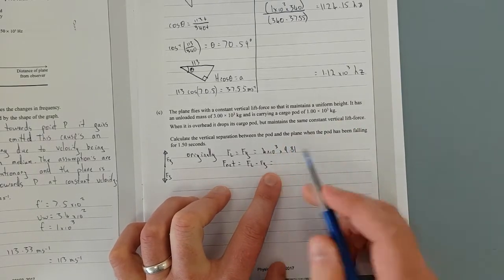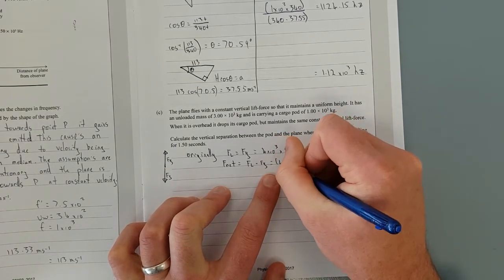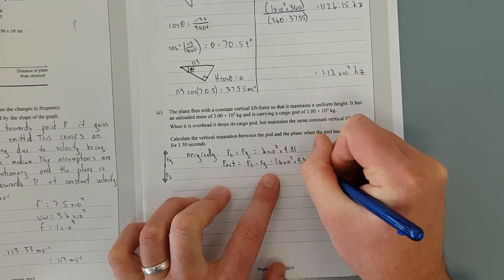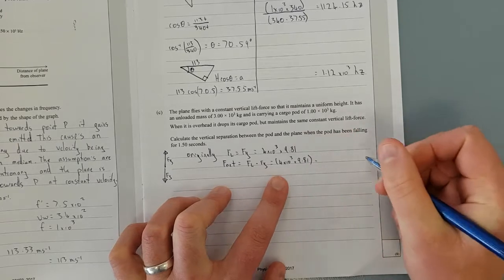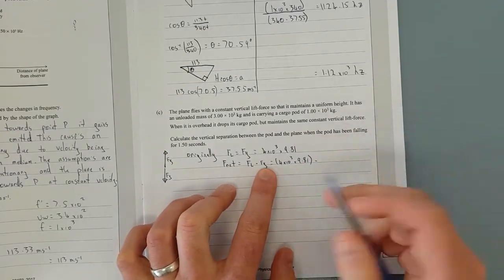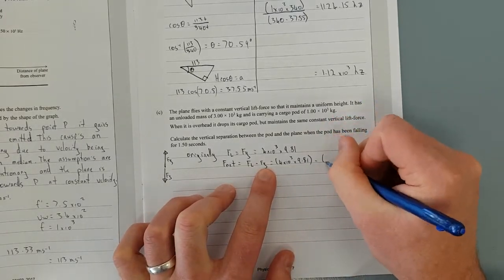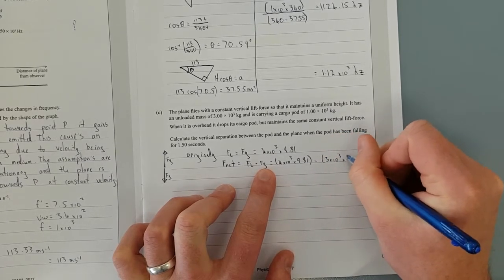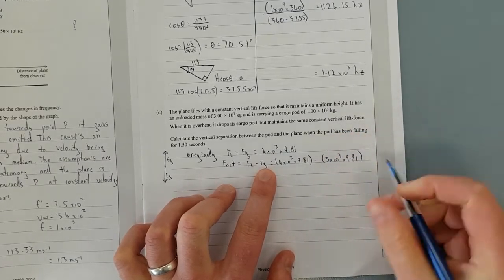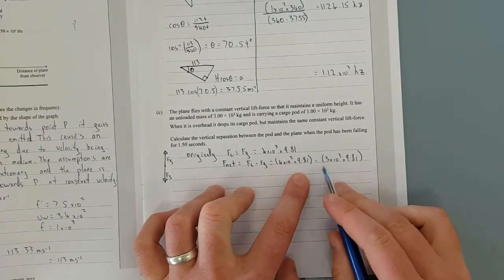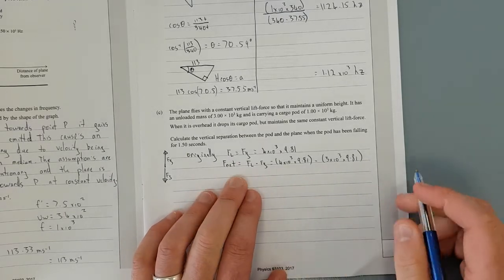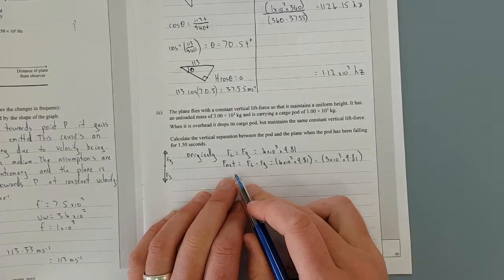Which will equal the original lift force which is just going to be 4 times 10 to the 3 times 9.81 minus the new weight which is going to be 3 times 10 to the 3 times 9.81. I could have just got 1 times 10 to the 3 times 9.81 and that would have given me the new net force.